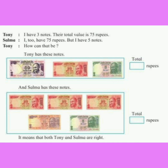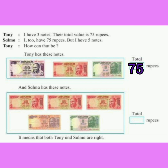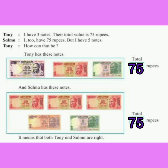Let's hear the conversation between Tony and Selma. Tony says: I have 3 notes and their total value is 75 rupees. Selma replies: I too have 75 rupees but I have 5 notes. Tony has 50 plus 20 plus 5, which equals 75 rupees. Selma has 3 into 20 equal to 60, plus 10, plus 5, which also equals 75 rupees. It means that both Tony and Selma are right.